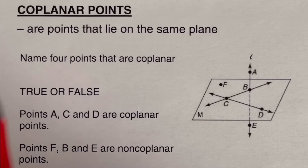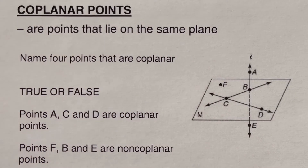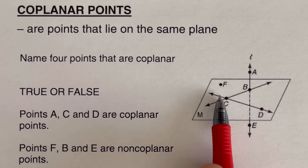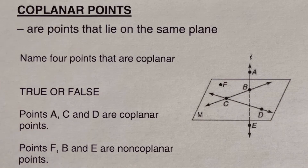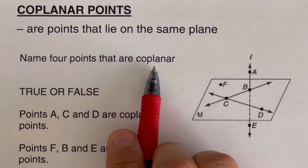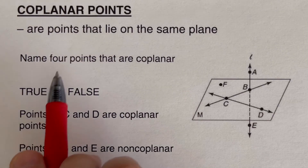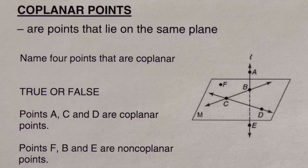Coplanar points are points that lie on the same plane. We have this plane with points around it and three lines. We are supposed to name four coplanar points. Just imagine a piece of paper — if you put dots on the paper, those dots are coplanar because they are on the same plane.